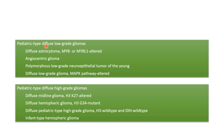Pediatric diffuse low-grade Gliomas can be diffuse astrocytoma MYB or MYBL1 altered, angiocentric glioma, PLNTY (polymorphous low-grade neuroepithelial tumor of young), or diffuse low-grade glioma MAPK pathway altered. Pediatric diffuse high-grade Gliomas can either be H3K27M altered, H3G34RV mutant, diffuse pediatric type high-grade glioma H3 wild type IDH wild type, or infant type hemispheric glioma.